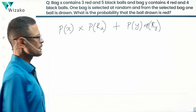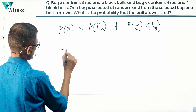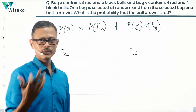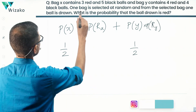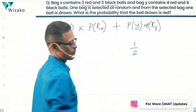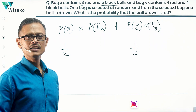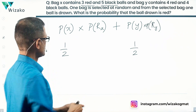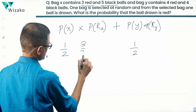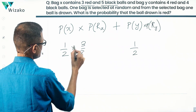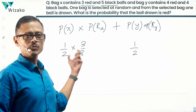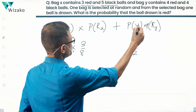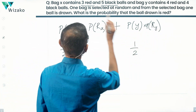Probability of selecting bag X equals half, and probability of selecting bag Y equals half — they are equally likely. In bag X we have three red and five black balls, giving a total of eight balls. Probability of selecting a red ball from bag X is the number of red balls divided by the total, which equals three-eighths. So half times three-eighths is the probability of selecting bag X and drawing a red ball.